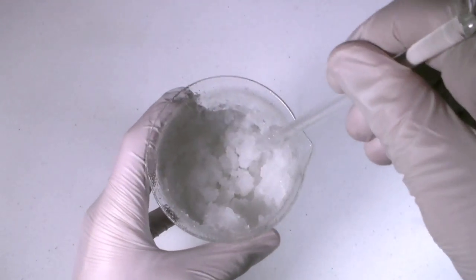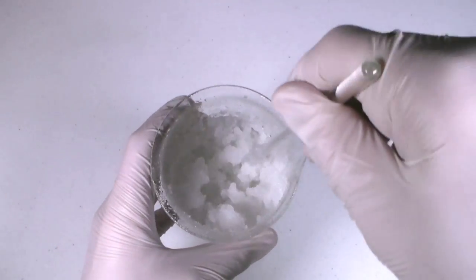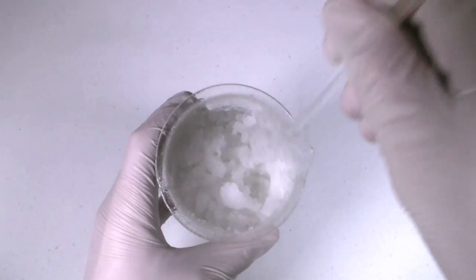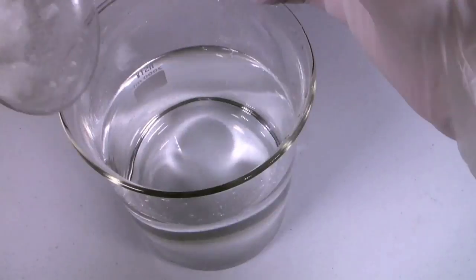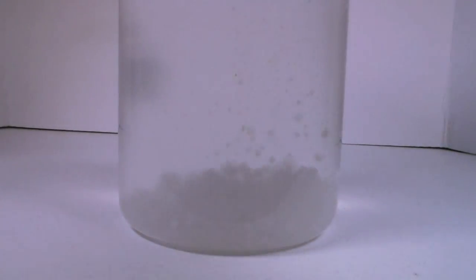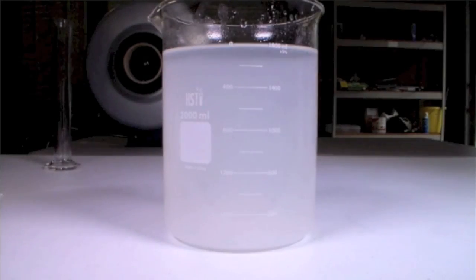As you can see, the suspension is really thick and gelatinous, and so filtering it would take forever. Instead, add the Aluminum Oxide to a large volume of water and wait for the suspension to settle.